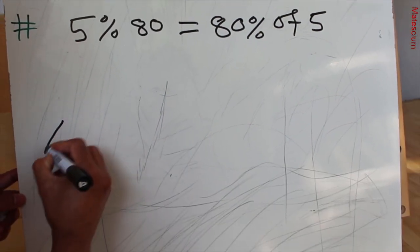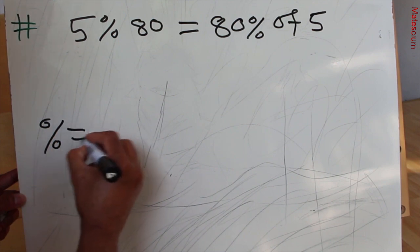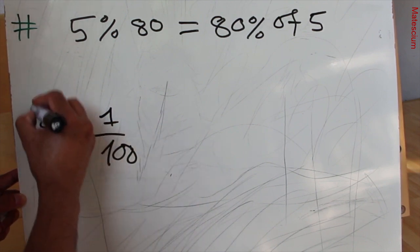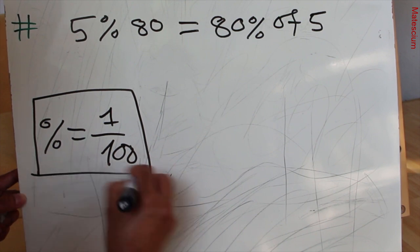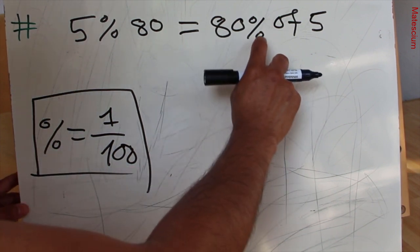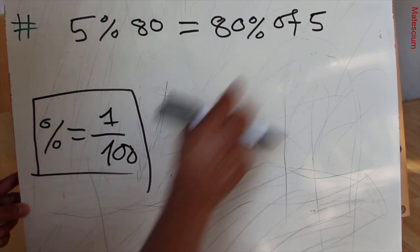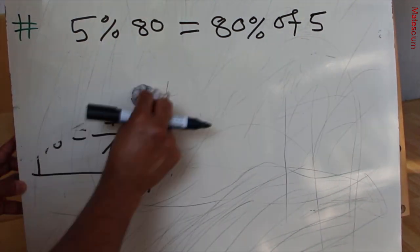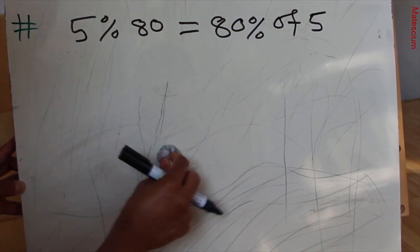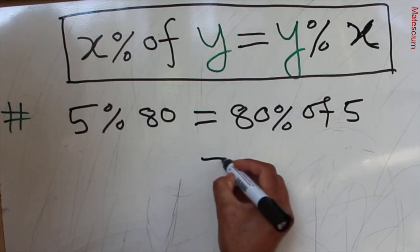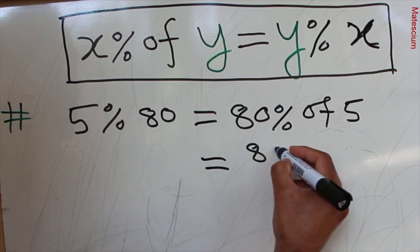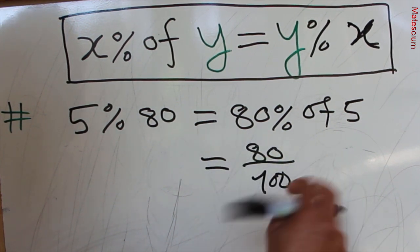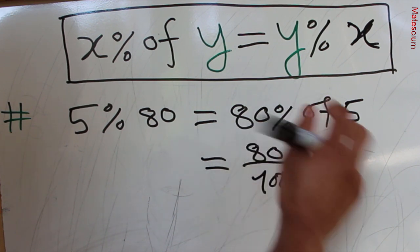In one of my previous videos, I already showed that 'percentage' means 1 over 100 — wherever there is a percentage sign, it means 1 over 100. So if we replace the percentage sign with 1 over 100, we can calculate this expression. Let's rewrite the right-hand side this way: 80 over 100.